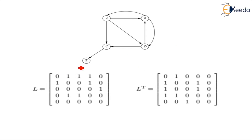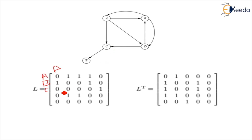We build the adjacency matrix L. Whenever there is an edge, we write 1; if there is no edge, we write 0. For example: from A to A — no edge, so 0. From B to A — yes, there is an edge, so 1. From C to A — no edge, so 0. From D to A — no edge, so 0. From E to A — no edge, so 0. We continue this process to complete the full L matrix. Then we take the transpose L-transpose by converting rows into columns.